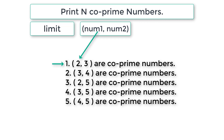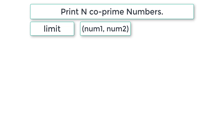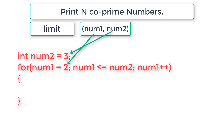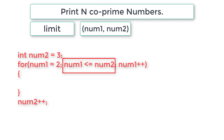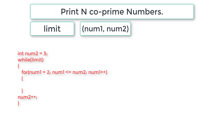The initial values are num1=2 and num2=3, the first co-prime pair. Going forward we need to fetch other numbers too, so we use a for loop. The for loop iterates while num1 is less than or equal to num2. Outside this for loop, we increment num2 so we can go further and check other pairs, and num1 increments by 1 for each iteration.